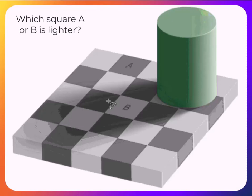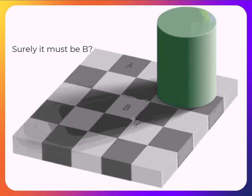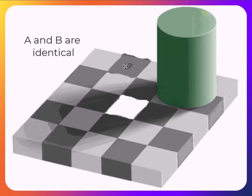So the question here is which of the squares A or B is lighter, which seems like a ridiculous question. It's clearly B, but what I'm going to do here is simply use a paint package to cut out square B and place it over square A.